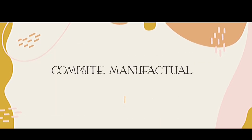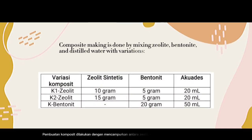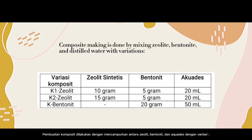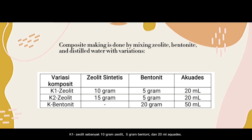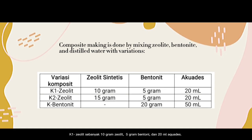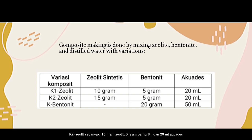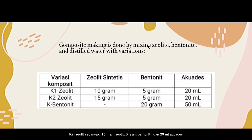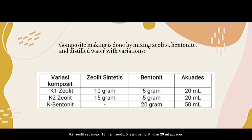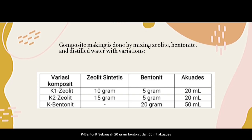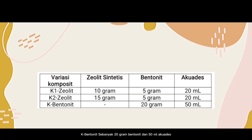Composite manufacturing is done by mixing zeolite, bentonite, and distilled water with variations. Variation K1: 10 grams of zeolite, 5 grams of bentonite, and 20 ml of distilled water. Variation K2: 15 grams of zeolite, 5 grams of bentonite, and 20 ml of distilled water. Variation K3: 20 grams of bentonite and 15 ml of distilled water.